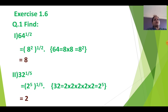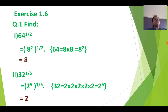Let us start with Exercise 1.6. Here the questions will be of two types: Find and Simplify. Simplify means you just have to apply the laws of indices and simplify. But Find means we have to find the actual value — the final value is expected.